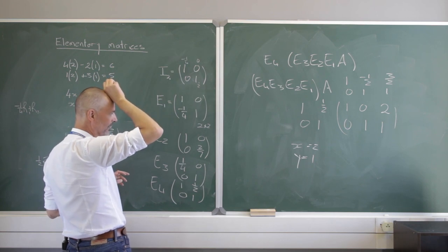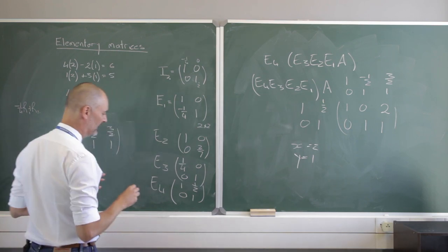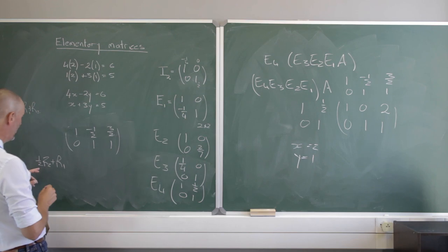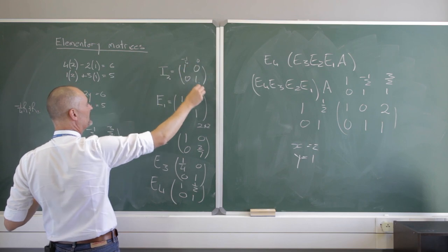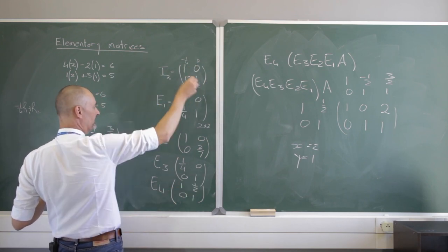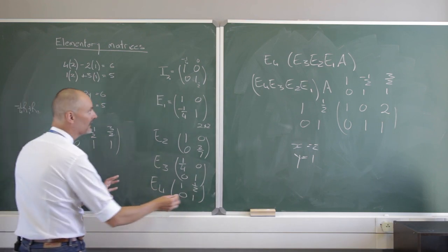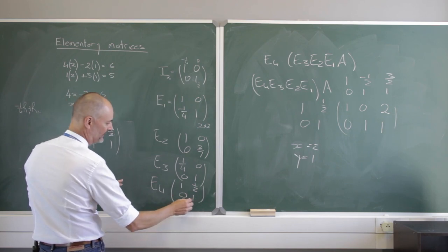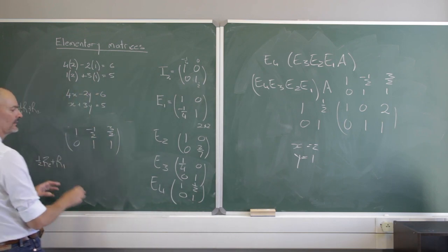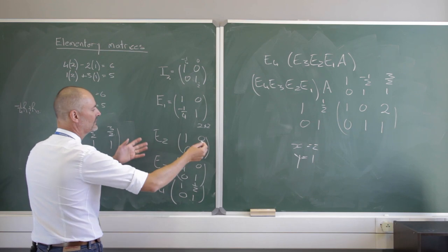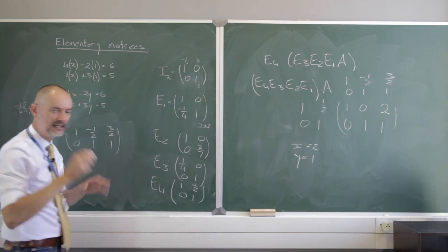Be careful about a common pitfall when constructing elementary matrices. When I say a half times row 2 plus row 1, that means I'm changing row 1 and leaving row 2 exactly where it was. So in E4 the second row stays as [0, 1] — it's row 1 that changes. Similarly, the earlier operations were changes of row 2, not row 1. Be careful which row you are actually modifying.